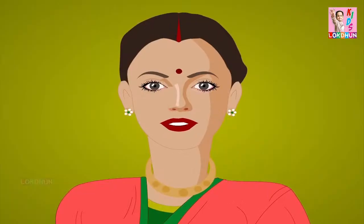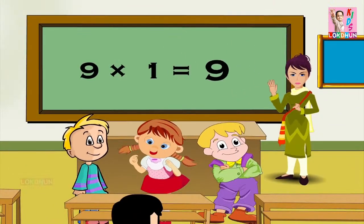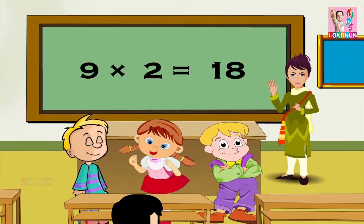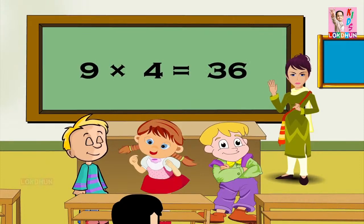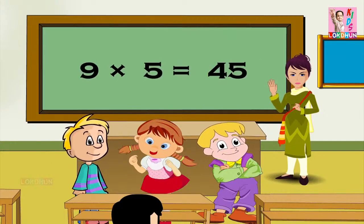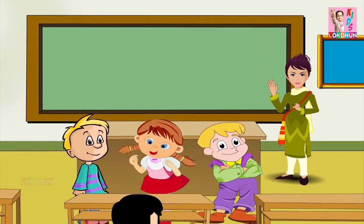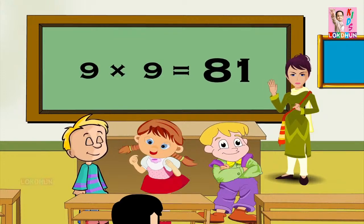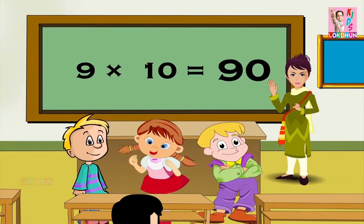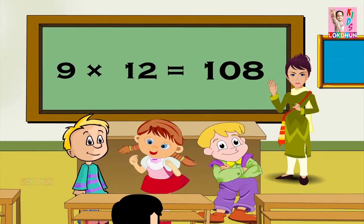Your turn. 9 1s are 9, 9 2s are 18, 9 3s are 27, 9 4s are 36, 9 5s are 45, 9 6s are 54, 9 7s are 63, 9 8s are 72, 9 9s are 81, 9 10s are 90, 9 11s are 99, and 9 12s are 108.